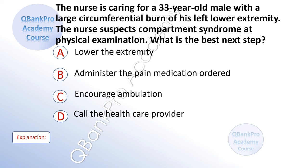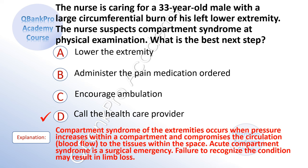The nurse is caring for a 33-year-old male with a large circumferential burn of his left lower extremity. The nurse suspects compartment syndrome on physical examination. What is the best next step? A. Lower the extremity. B. Administer the pain medication ordered. C. Encourage ambulation. D. Call the healthcare provider. The correct answer is D. Compartment syndrome of the extremities occurs when pressure increases within a compartment and compromises circulation to the tissues. Acute compartment syndrome is a surgical emergency and failure to recognize it may result in limb loss.